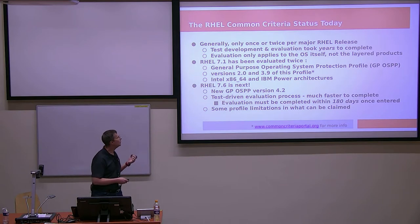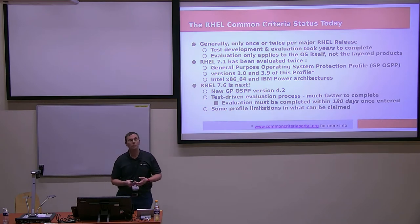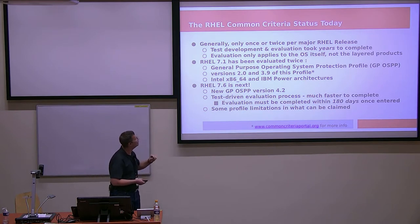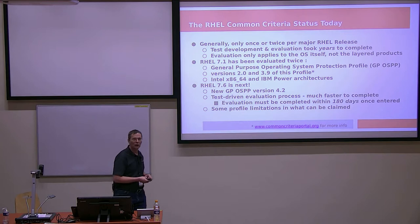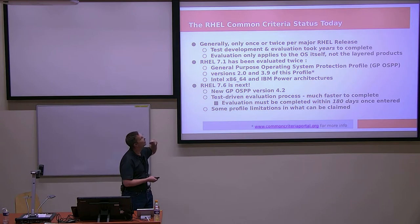Where are we today? Red Hat has been doing Common Criteria for a very long time. Generally for the operating system, we've picked the General Purpose Operating System Protection Profile — GPOSPP. We've evaluated RHEL 7 twice, against OSPP version 2.0 and OSPP 3.9, on Intel x86-64 and IBM Power architectures. That version is actually end of life — you can't get support from Red Hat on 7.1 anymore. In practice, customers will use our security target and the evaluation report as a continuation and justification for using newer versions of the operating system.